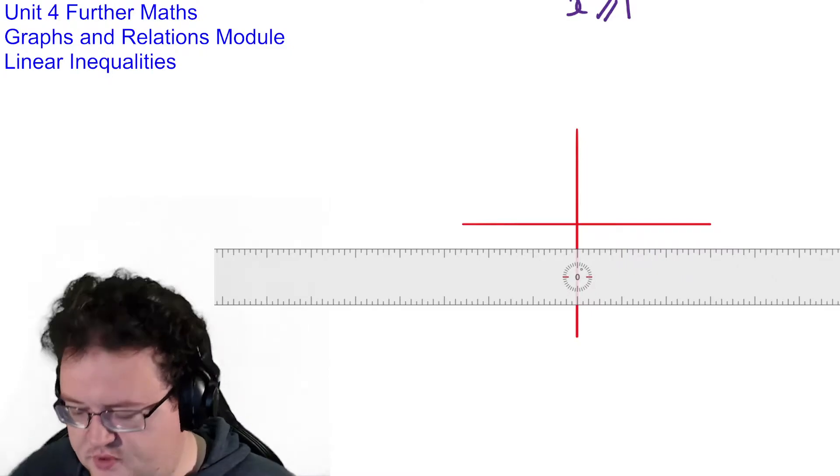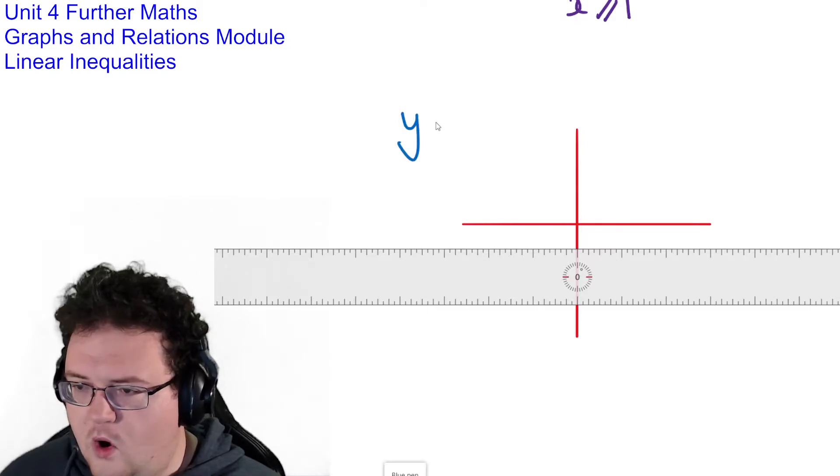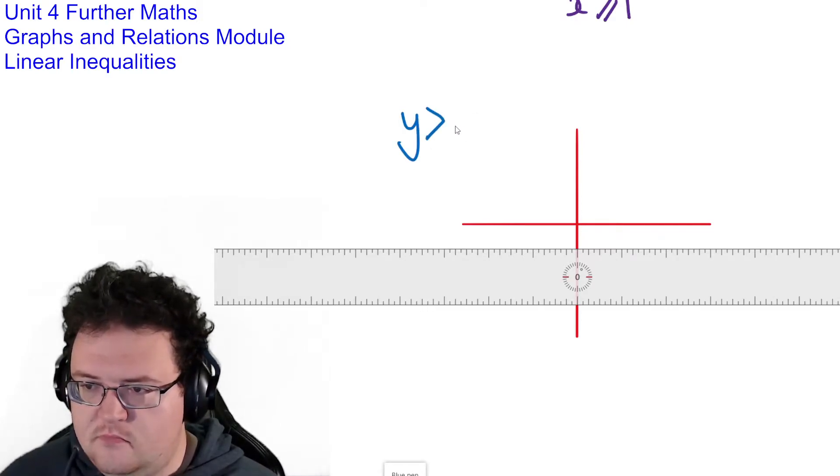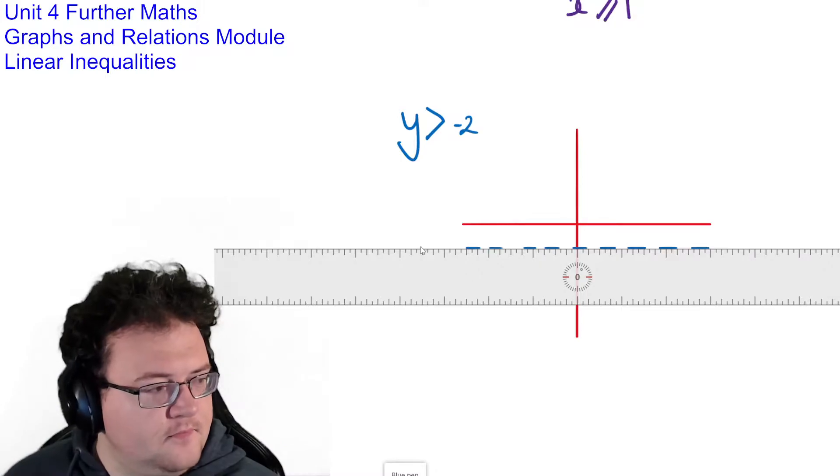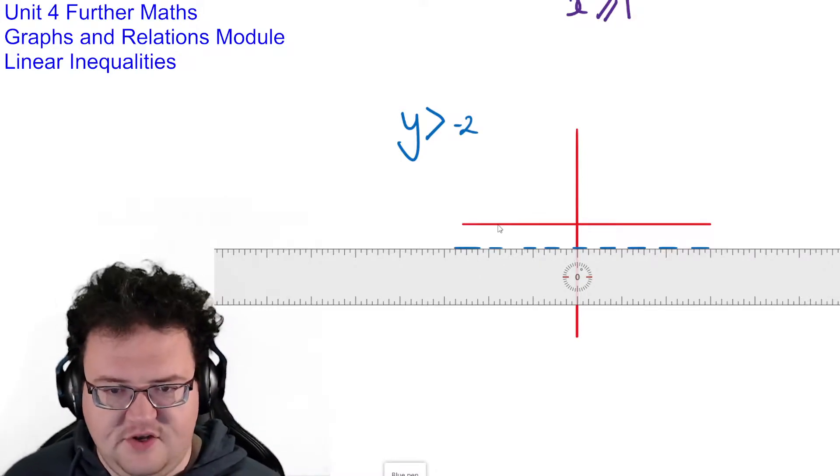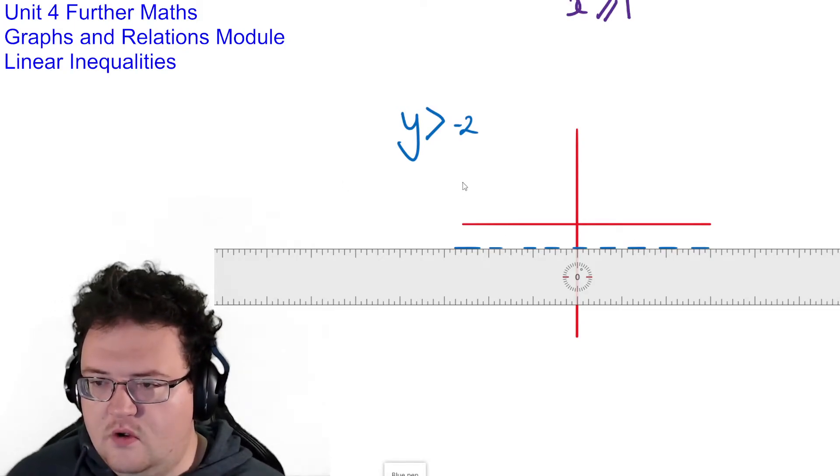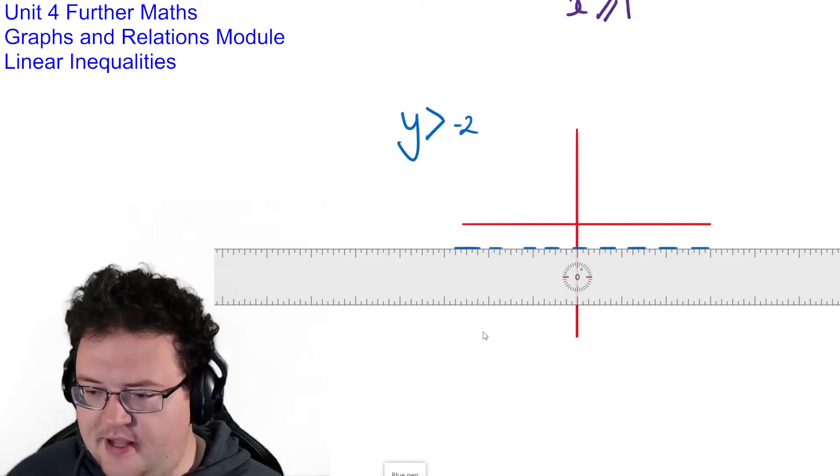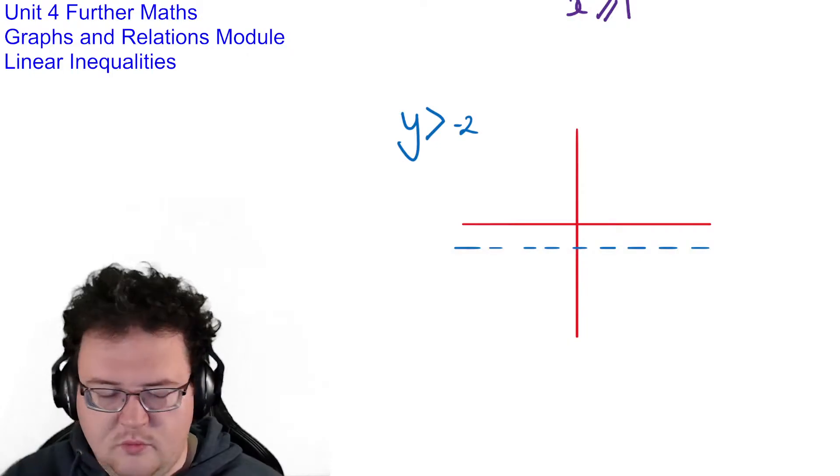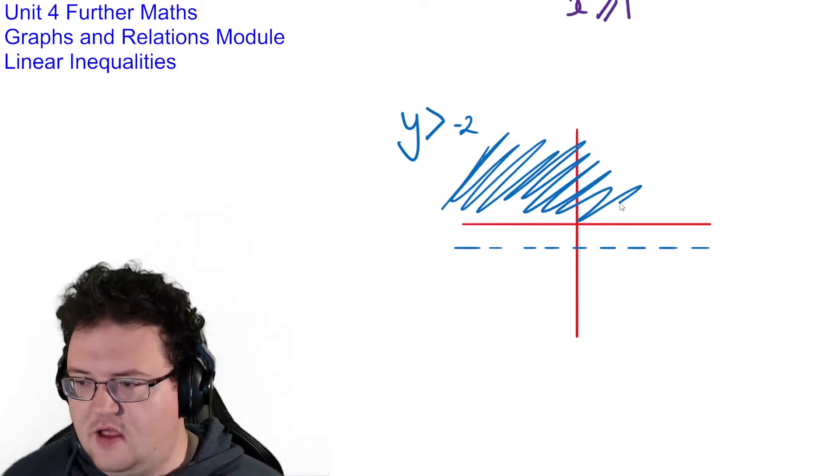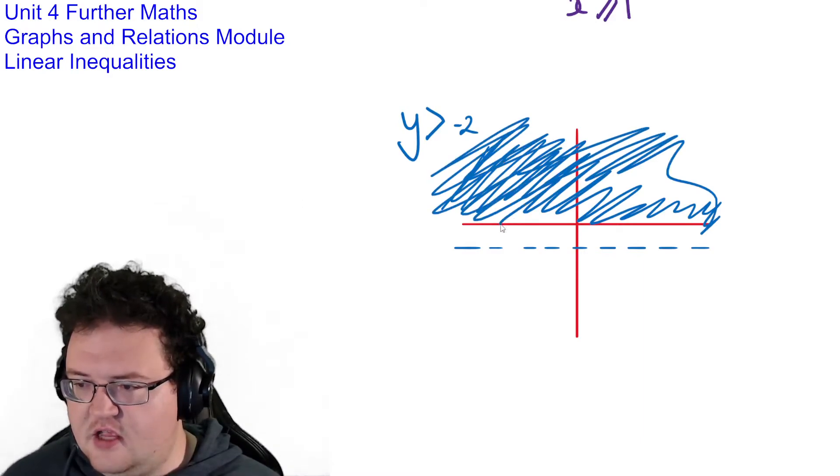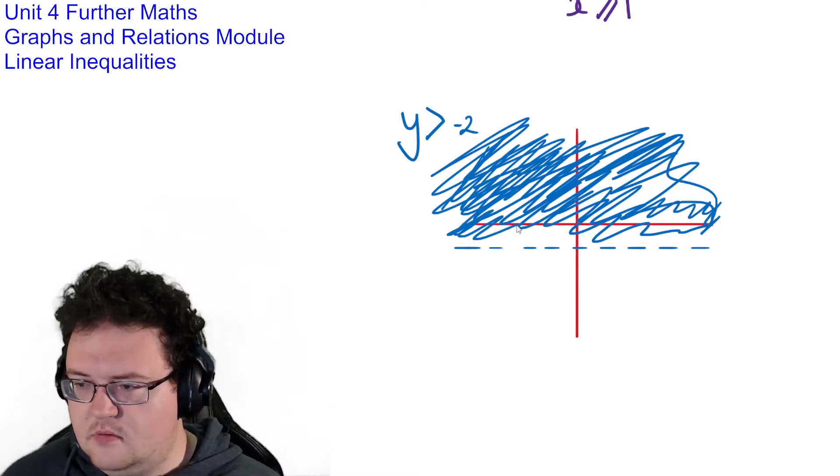So if I wanted to do, say for example, y is greater than negative 2, I would find negative 2 on my axis. Again it's a single line here or a double line. Therefore I don't have to put a solid line in. And now y is greater than minus 2 means I'm going to be shading above or below the line. Well its numbers are larger than minus 2, so it's going to be all this entire space up here. Everything here gets shaded.